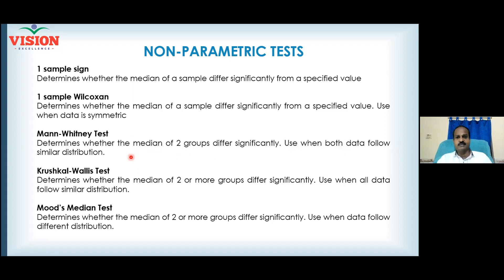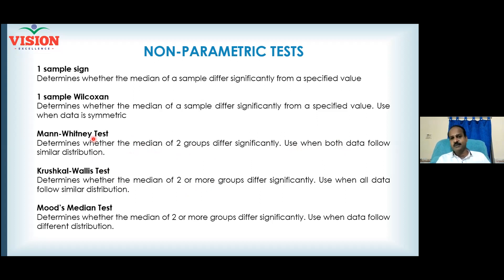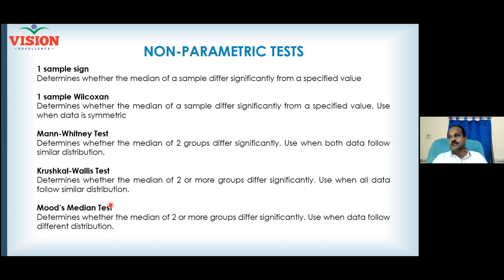Both groups may be skewed, but they follow a similar distribution. The Kruskal-Wallis test determines whether the median of two or more groups differ significantly, and is used when all data follow a similar distribution. Kruskal-Wallis can be a replacement for Mann-Whitney, but Mann-Whitney cannot replace Kruskal-Wallis. When two or more groups differ significantly but the different groups follow different distributions — not similar — use the Mood's median test.